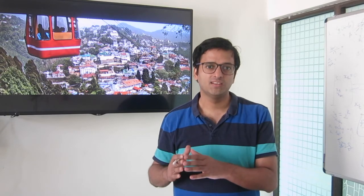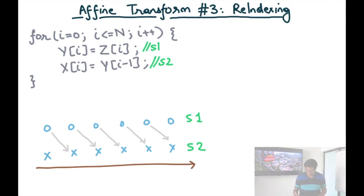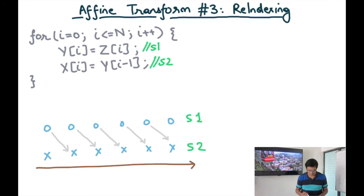I'm going to discuss our third affine transform, the third primitive affine transform, and this is called re-indexing. Here is an example to show the third primitive affine transform.